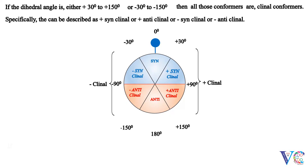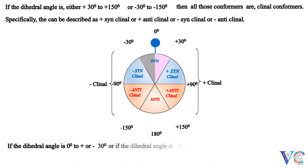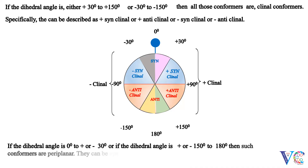If the dihedral angle is 0 degrees to plus or minus 30 degrees, or if the dihedral angle is plus or minus 150 degrees to 180 degrees, then such conformers are periplanar. They can be syn-periplanar or anti-periplanar.